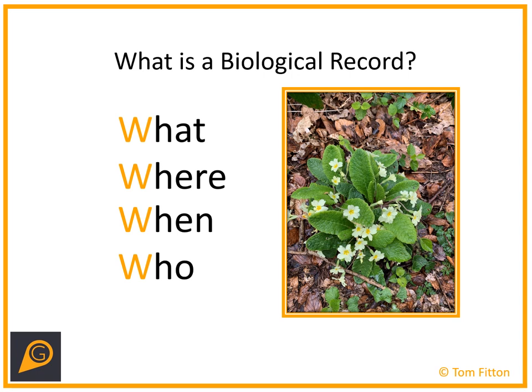These can be as specific or broad as possible. In terms of species it can be common names, scientific names, up to groups, or generic descriptions. Similarly with locations, it can be from precise grid references to street names, to parks, to areas. The 'when' is usually a date, year, or month if the exact date isn't available, and the 'who' is usually a recorder's name but can be a group name or, in the case of online recording, a username.